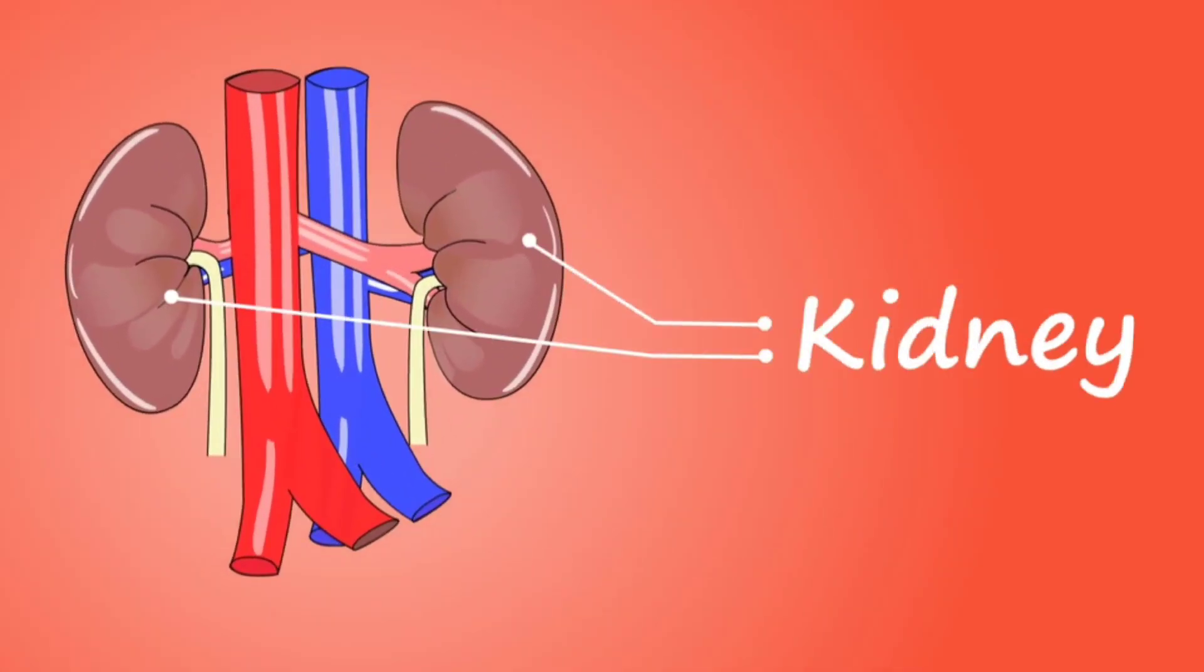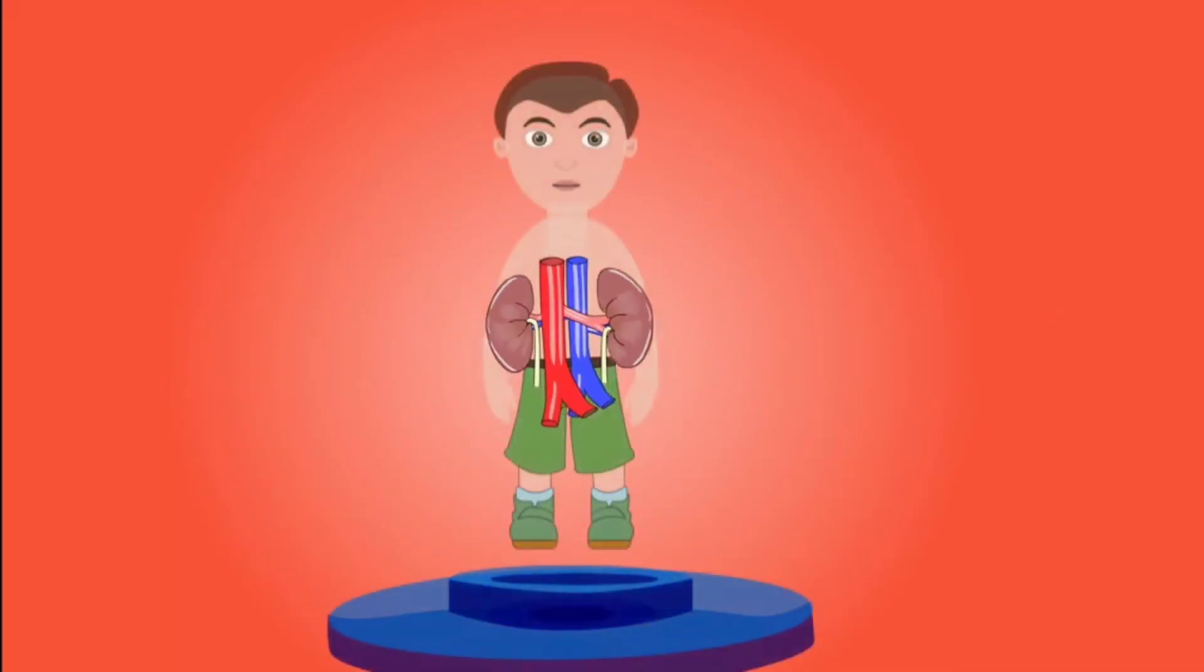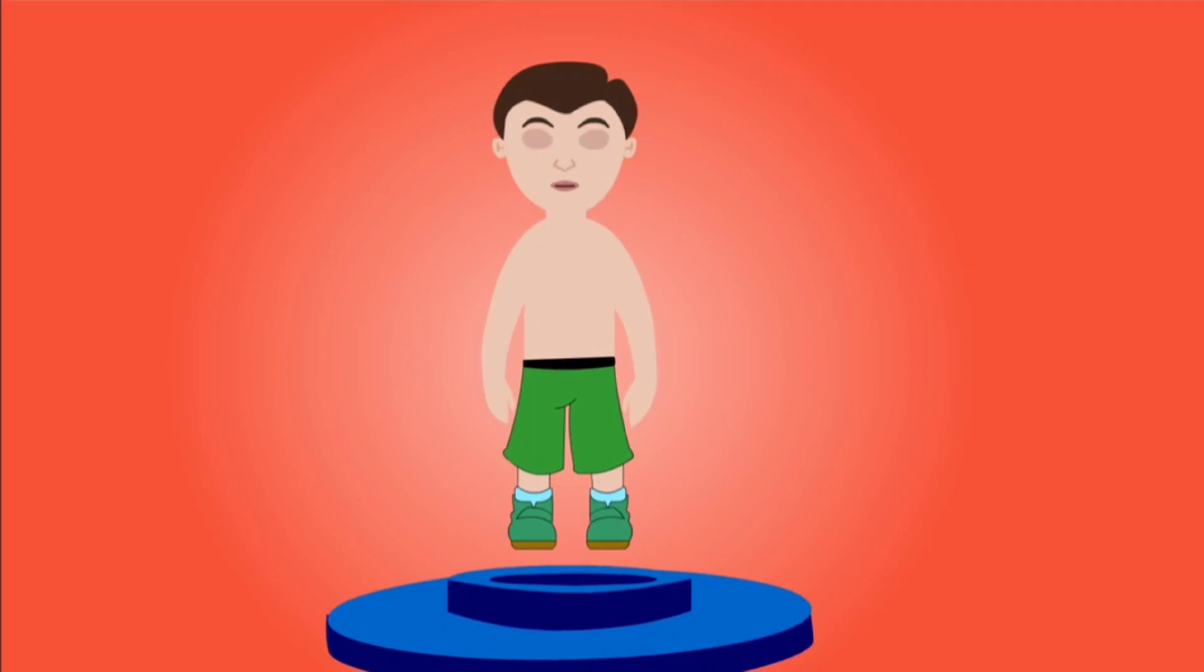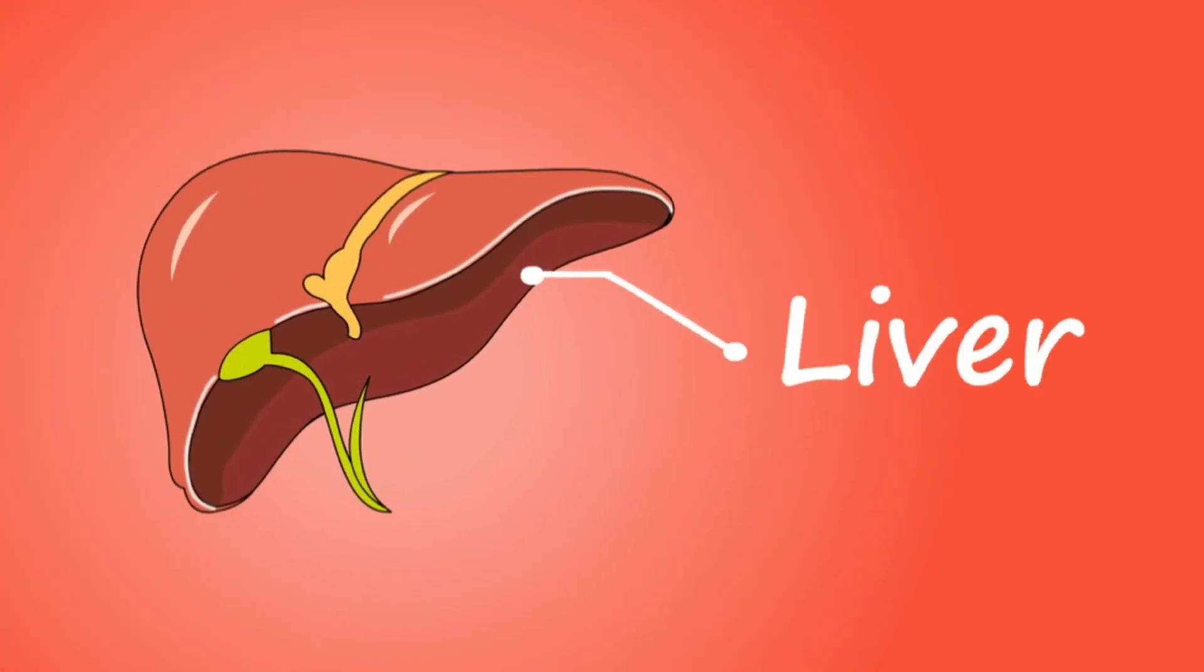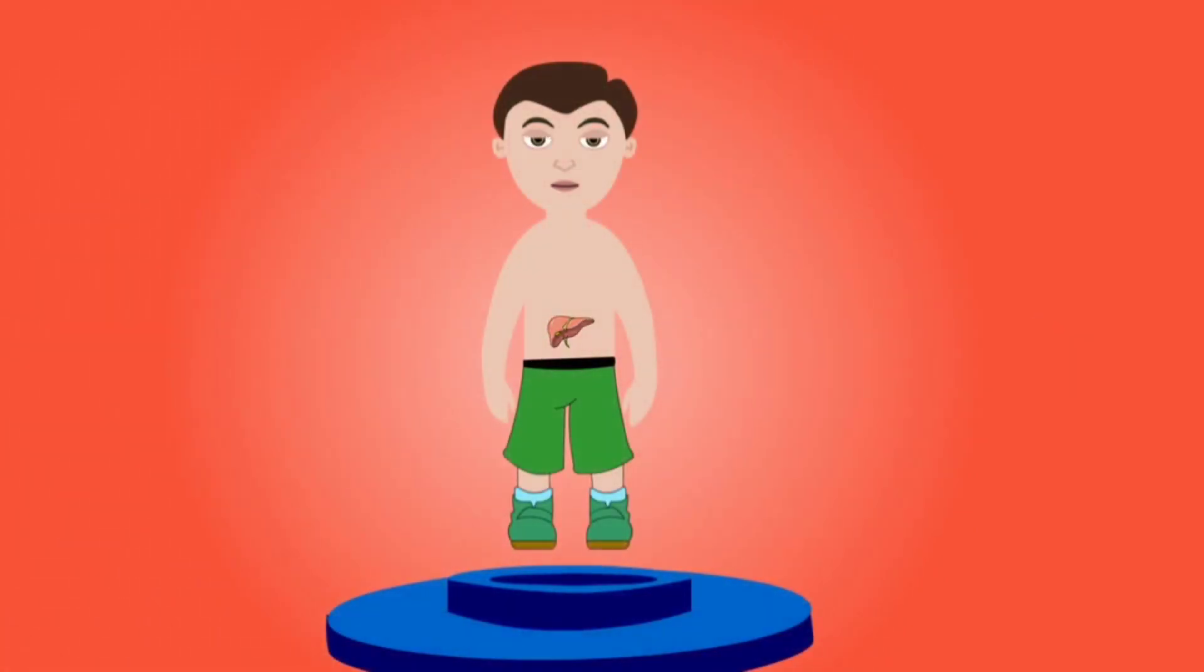Kidneys filter around 180 liters of blood every day. The liver can regenerate itself, store vitamins and minerals, and remove bacteria from the blood.